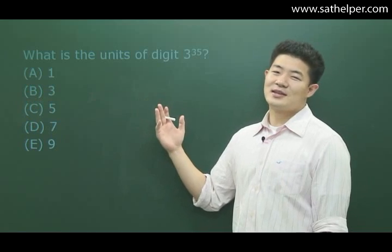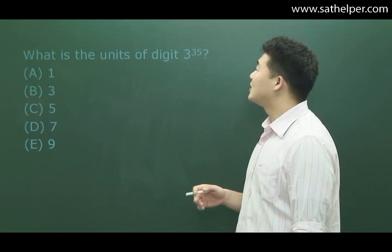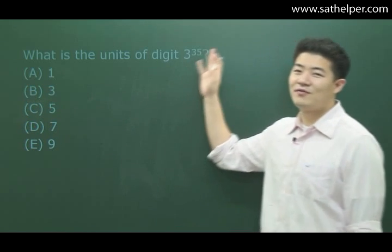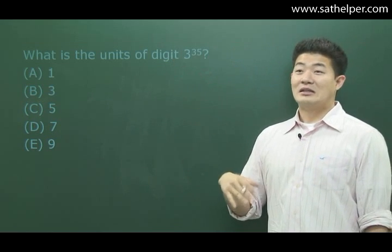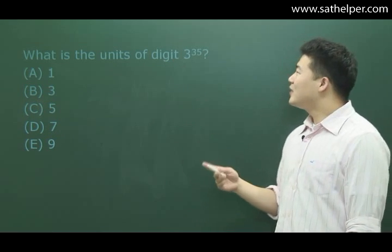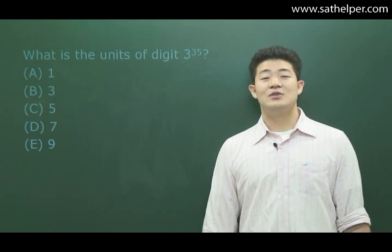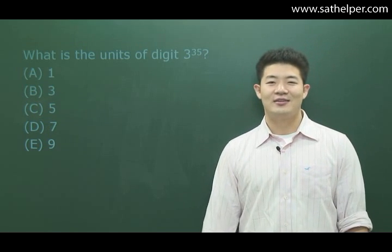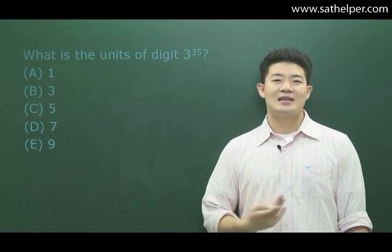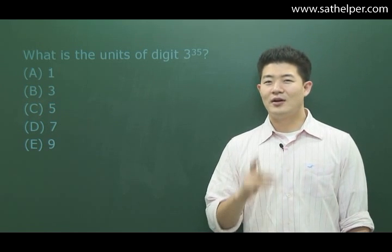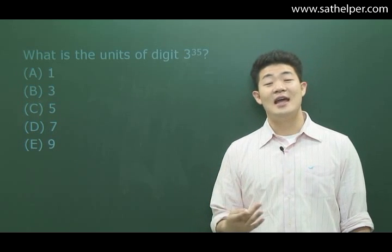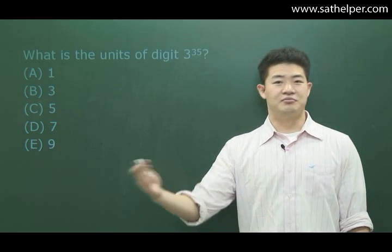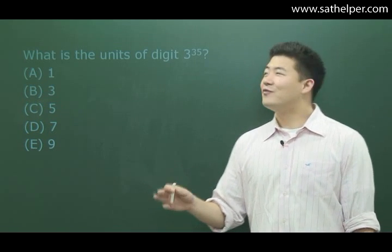Okay? So, let's take this problem for example. It says, what is the units of digit 3 to the 35th power? Okay, first of all, 3 to the 35th power is a lot, okay? Now, one thing is, well, for the actual SAT 1 math, you will have the calculator. So, you know, that won't be as big of a problem. However, you have to get the concepts for a lot of these in order to understand how to plug it into your calculator, okay? So, for this problem...